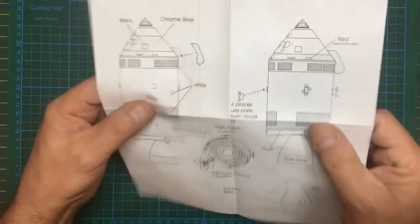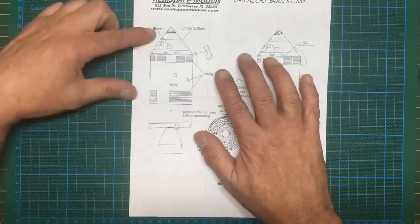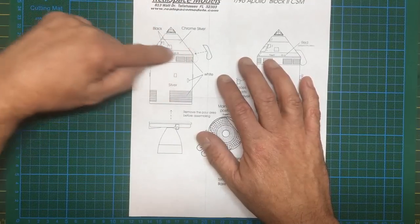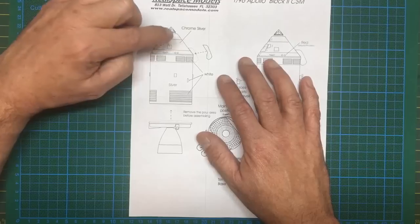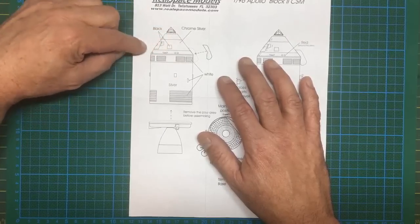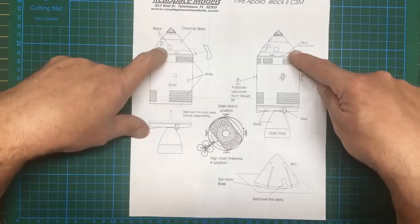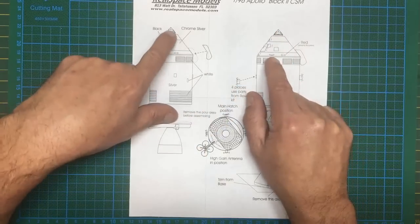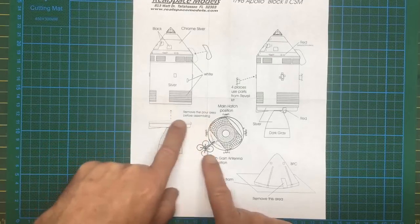We can see straight away it's just one A4 sheet of printed paper, black and white, but it's telling us all we need to know. Basically, our command module and the service module: service module silver with the grills being white, the actual command module itself chrome silver. In reality it was covered in strips, so you could use chrome foil or whatever.